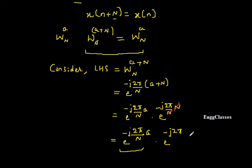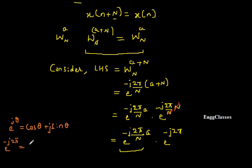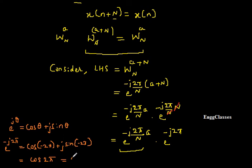Using Euler's rule, e to the power (j theta) equals cos(theta) + j·sin(theta). With theta = minus 2π, we get e to the power (minus j 2π) = cos(minus 2π) + j·sin(minus 2π). Since cos(minus 2π) = cos(2π) = 1 and sin(2π) = 0, this whole term equals 1.